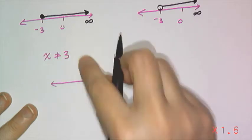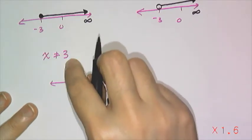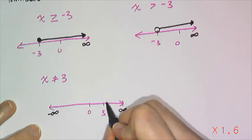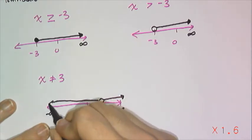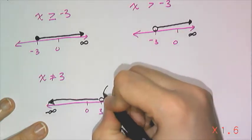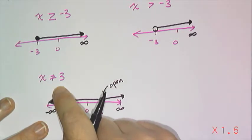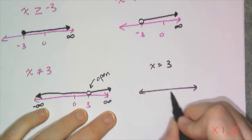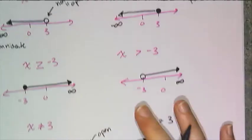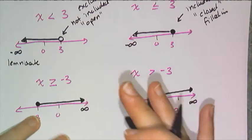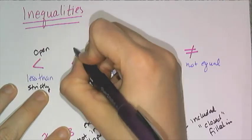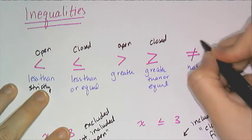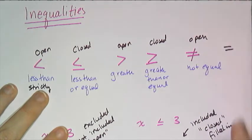Not equal to is kind of interesting, because not equal to means I want every single number except that one. Looking at these symbols, I need to go to negative and positive infinity, but I need to think about what's going on with that 3. I don't want 3, so I'm going to be open at 3. Not equal to 3 means it's open there. And in contrast, if you really wanted to know what x equals 3 looked like on a number line, it's just 3 with a closed dot on it. So you need to remember: open dot for strictly less than or greater than, closed dot for less than or equal to or greater than or equal to, open for not equal to, and closed for equals.